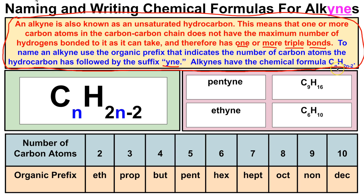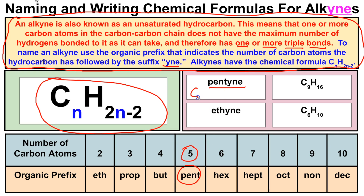Alkynes have the generic formula CₙH₂ₙ₋₂. For pentyne, 'pent-' means five carbon atoms, so C₅. Plugging in: 2 times 5 is 10, minus 2 is 8, so the chemical formula for pentyne is C₅H₈. For ethyne, 'eth-' means two carbon atoms. Plugging in: 2 times 2 is 4, minus 2 is 2, so the chemical formula for ethyne is C₂H₂.